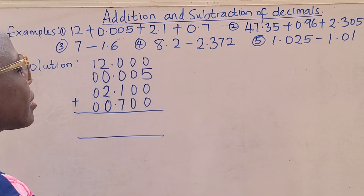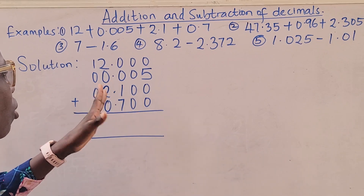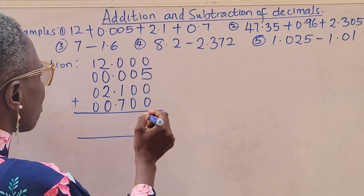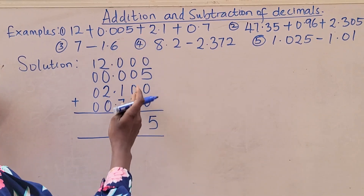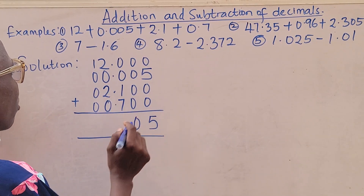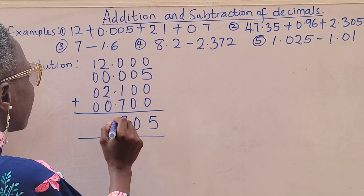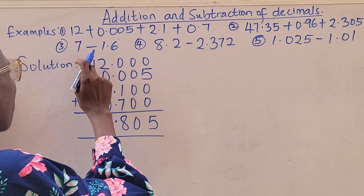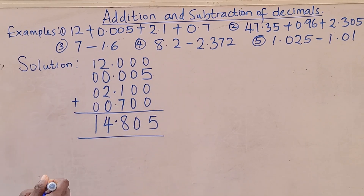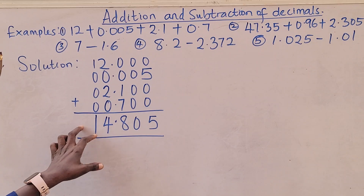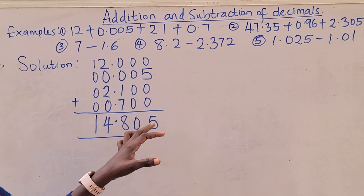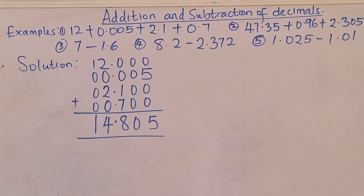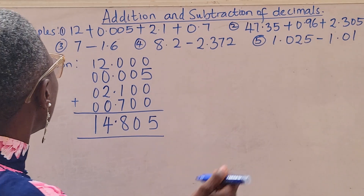With decimals aligned and zeros filled in, there will be no confusion at all. 5 + 0 + 0 + 0 = 5. Then 0 + 0 + 1 + 7 = 8. Then 2 + 2 = 4 and 1 + 0 = 1. So the final answer is 14.805. That is the addition of these decimals.